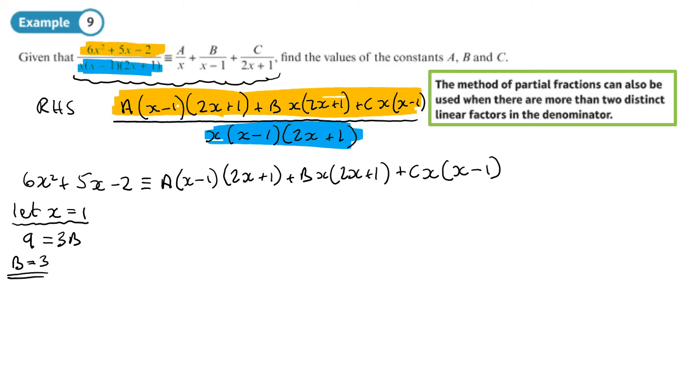Right, found 1, OK? Let x equal, now what other value can we choose? 0. That's going to make the second two things disappear, the b and the c. So I would have minus 2 on this side. And on the other side, I would have minus 1 times by plus 1. So I'll have minus a. So a equals 2.